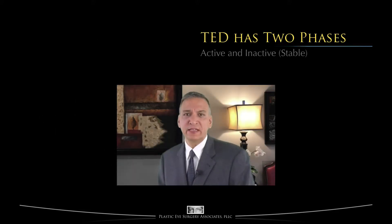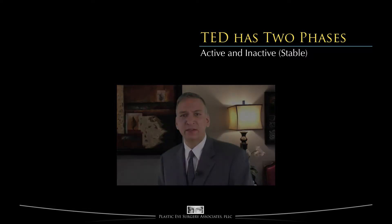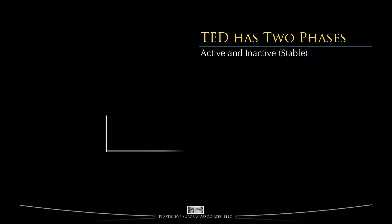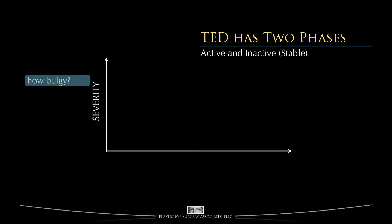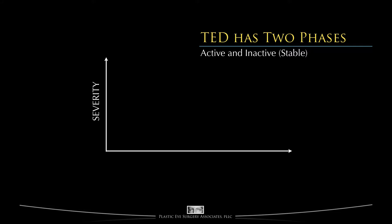Thyroid Eye Disease has two phases: an active phase and an inactive or stable phase. Let's represent the course of thyroid eye disease with a graph. The vertical axis will be severity of eye disease — in other words, how bulgy the eyes are, how retracted the eyelids are, how much optic neuropathy there is, etc. The horizontal axis is time.